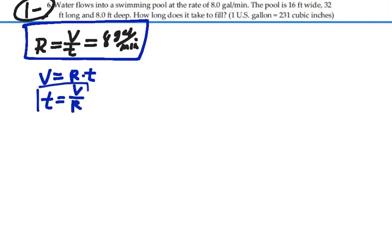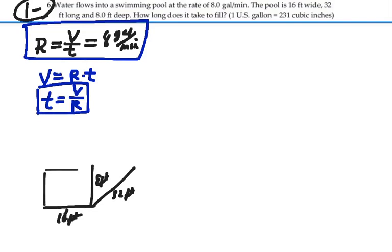So we need to find the volume, and we already know the rate. If we can find the right units, we can figure out the time. Let's take a look at this swimming pool. It's 16 feet wide, 32 feet long, and 8 feet deep. So it's a parallelogram that looks something like this.